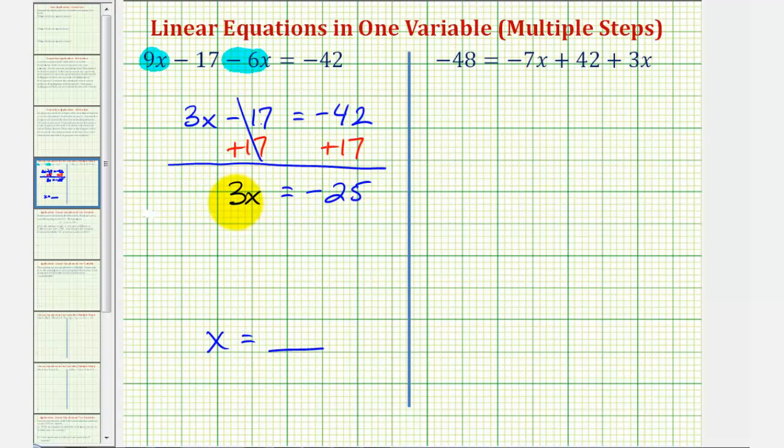Now looking at the left side again, three x means three times x, so to undo this multiplication, we'll divide both sides of the equation by three. Three divided by three is equal to one, so the left side is now x, and on the right side we have negative 25 thirds. This fraction is simplified because 25 and three don't share any common factors other than one, therefore this is our solution in simplest form.